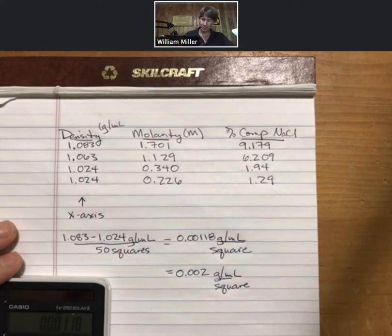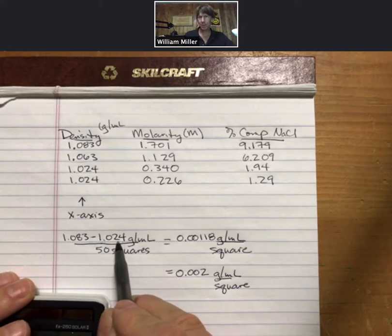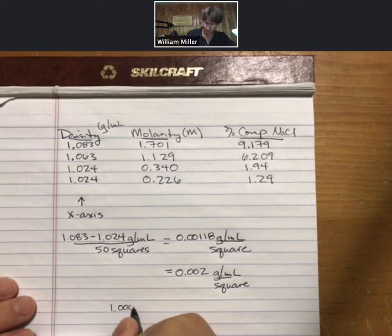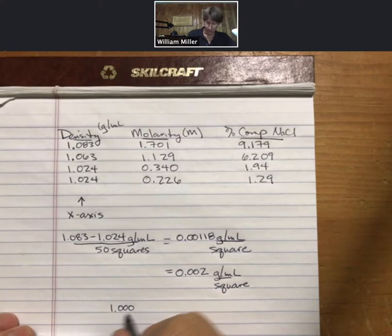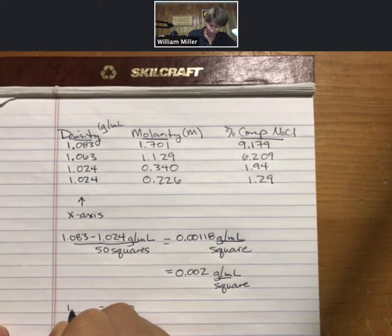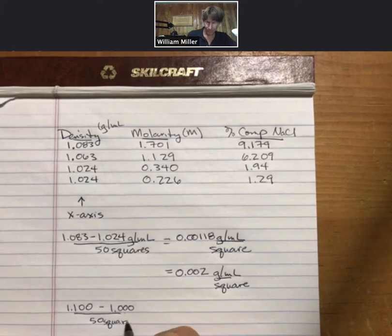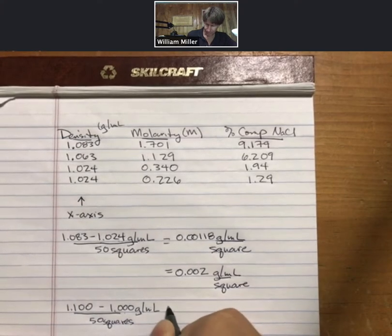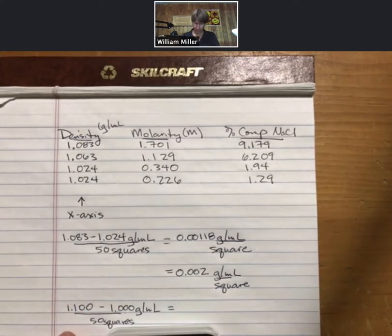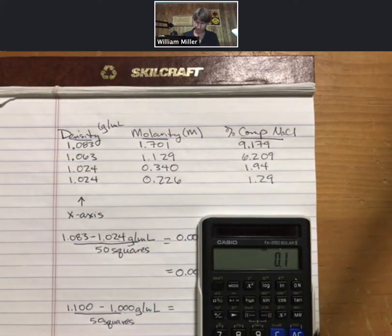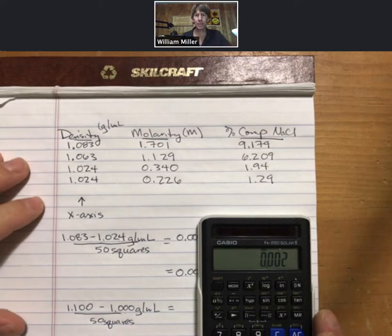And in addition to that, instead of going from 1.024 as my minimum on my x-axis, I'm going to go from 1.000. I'm going to go to 1.100. These are what I'm suggesting as my beginning and end points for the x-axis. I'm going to divide that by my 50 squares. And the numerator is just 0.10. Divided by 50. And it is exactly my 0.002.